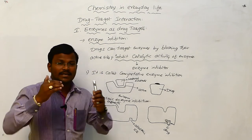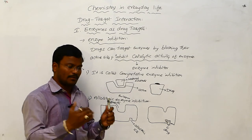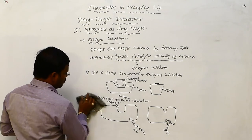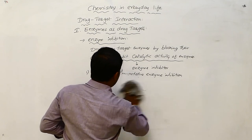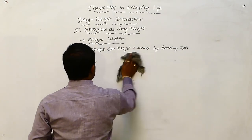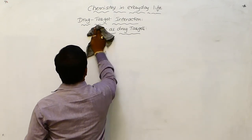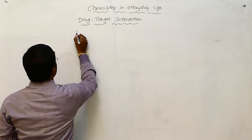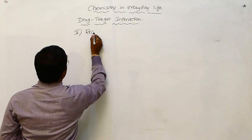By this mechanism, we can decrease the quantity of unnecessary product during metabolic processes. This is how drugs can target enzymes. Another important protein widely targeted by drug molecules is receptors.